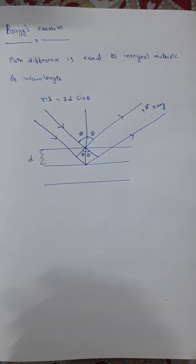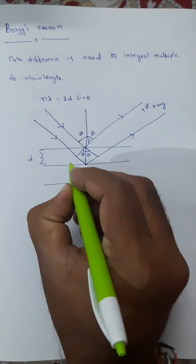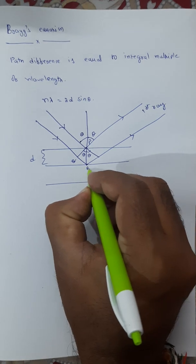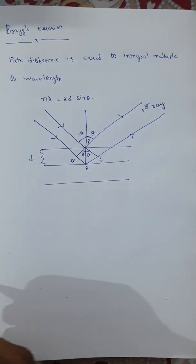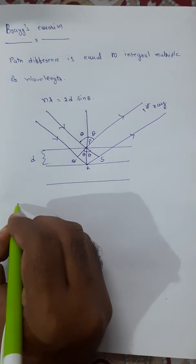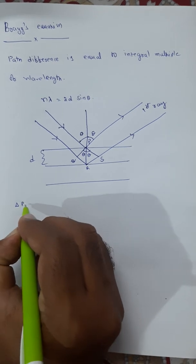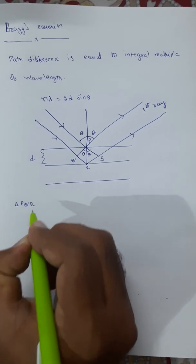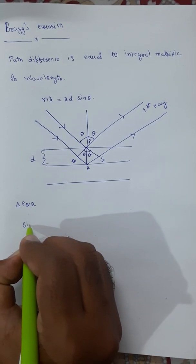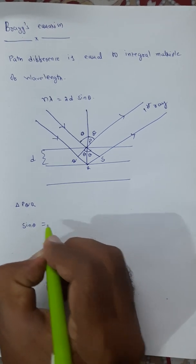When you draw the normal for the second ray also, these are making the same angles theta. Let us try to point these as P, Q, R, and S.